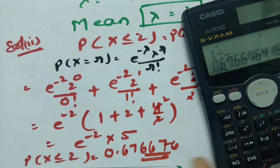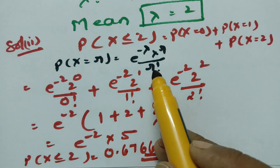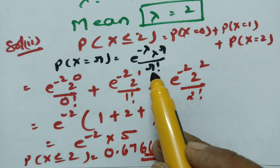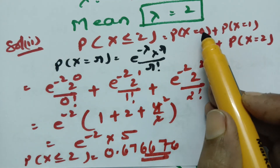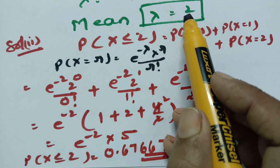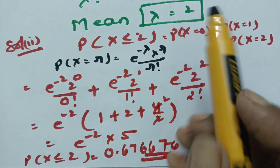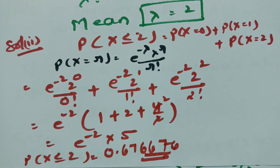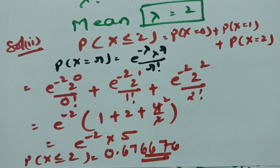So this is how we solve using the Poisson distribution formula, with the r values and the lambda value. Thank you so much for watching. I will be uploading many more problems related to this series. If you like it, please share it with your friends and subscribe to this channel.